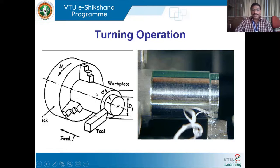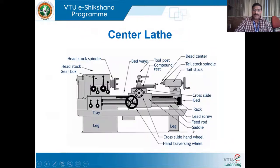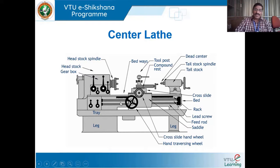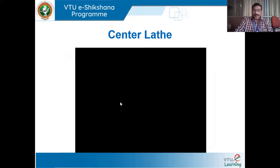Once depth of cut is given — say 1 or 2 mm — the tool moves inward from its initial position. When feed is given, the tool moves parallel to the axis of the lathe from right to left, removing unwanted material to produce the finished workpiece. A new reduced-diameter surface is generated, giving us the final finished component diameter.